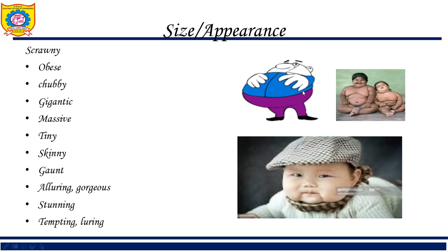For size: 'obese' describes overweight people — 'these are obese kids.' 'Chubby' describes cute little kids with chubby cheeks. 'Gigantic' or 'massive' describe something very big in size — 'I have a massive house.' 'Tiny' means very small.